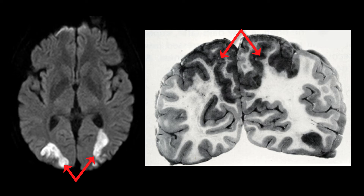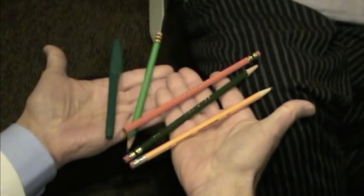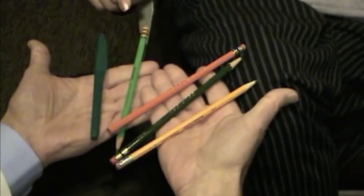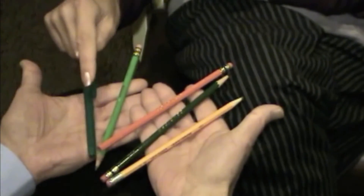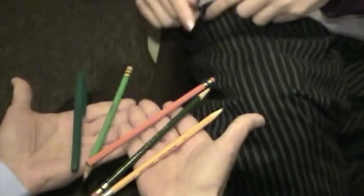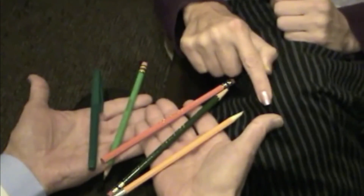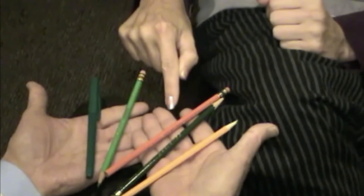Balint-Holmes Syndrome occurs acutely with border zone infarction in systemic hypotension and chronically in Alzheimer's disease. Here is an example of how Balint-Holmes Syndrome interferes with visual-spatial perception. Watch how this patient tries to count colored pencils. She misreaches and miscounts — one, two, three, four, five — making two errors. The first is optic ataxia: an inability to judge space. The second is simultanagnosia: an inability to perceptually aggregate objects in an array. These errors are part of Balint-Holmes Syndrome, which may also include inability to generate saccadic and pursuit eye movements. Balint-Holmes Syndrome arises from damage to both inferior parietal lobules.